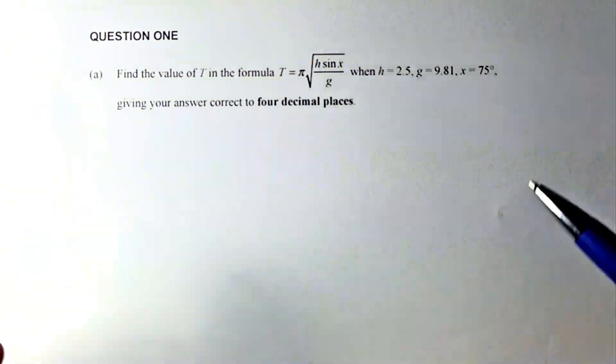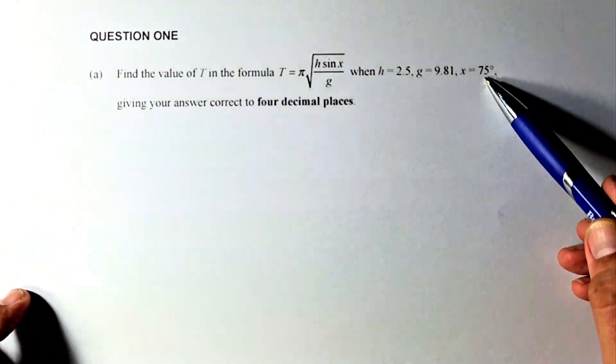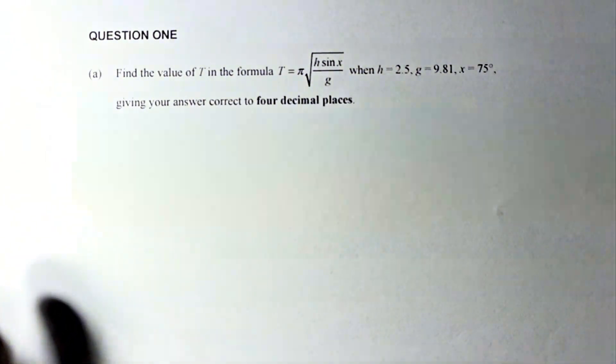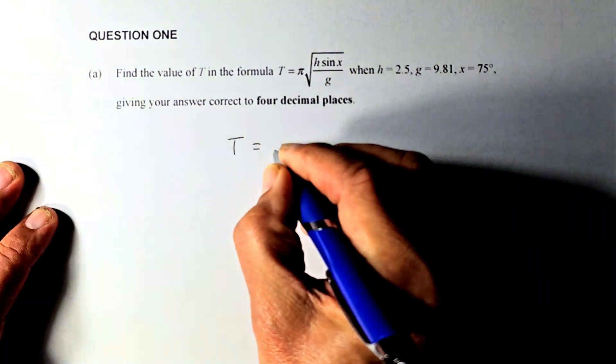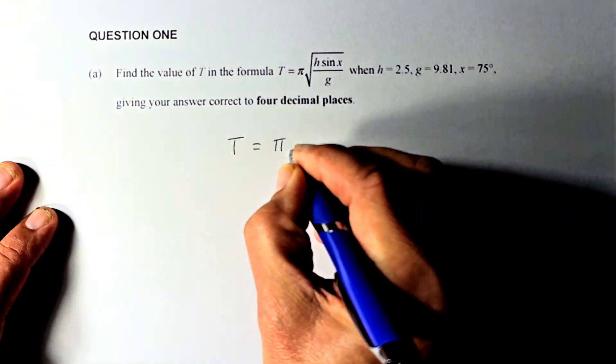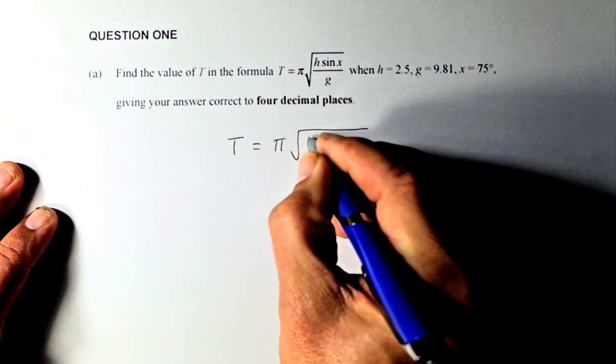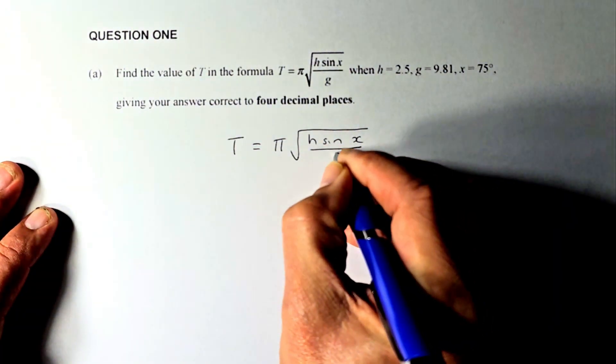So to do this, first you need to set your calculator mode to degrees instead of radian and we are ready to go. So the formula is going to be written here. T is equal to pi square root of h sin x over g.